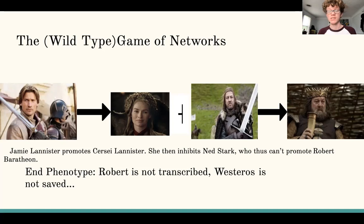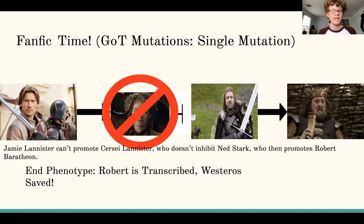So we have to think about some mutations here. What happens if we take Cersei out of this equation? Well, Jaime is still active and tries to promote her, but she doesn't exist. Therefore, she cannot inhibit Ned, and Ned can save Westeros by promoting Robert Baratheon, and that's the end phenotype.